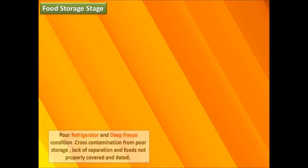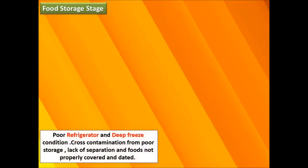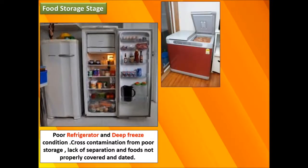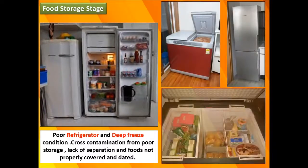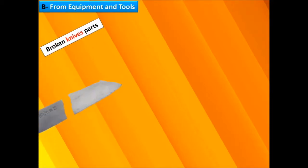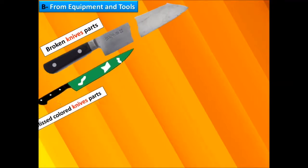Poor refrigerator and deep freeze conditions, cross-contamination from poor storage, lack of separation between foods, and food not properly covered and dated may also cause critical physical contamination. From equipment and tools, broken knife parts and missing parts of colored knives are a concern.